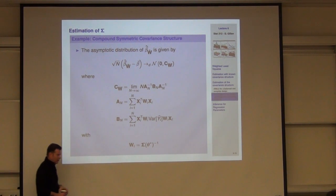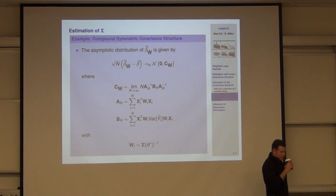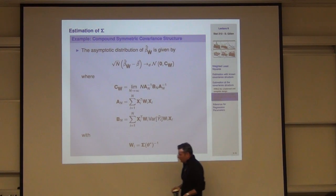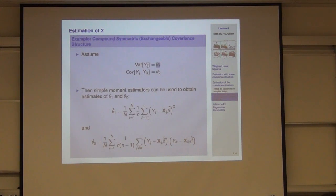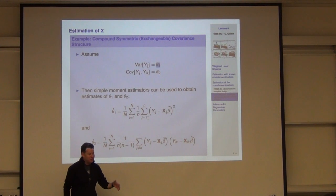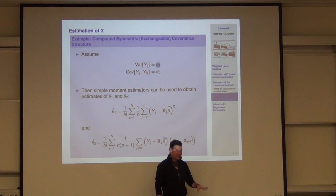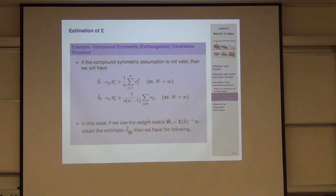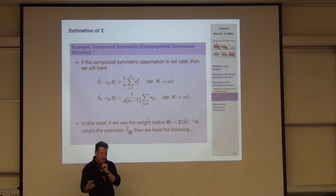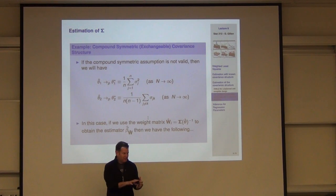Building on this question: the threshold for trusting the robust variance estimator can be roughly described as about a 10-to-1 ratio of independent clusters to observations per cluster. It depends a bit on within- versus between-varying covariates. When dealing with asymptotics, there's no finite-sample theory — just like teaching the central limit theorem and saying it works around n=30. That number came from simulations and practical experience, not from theory.